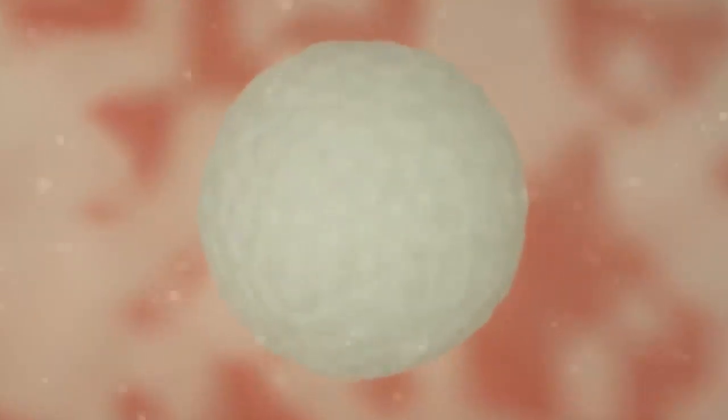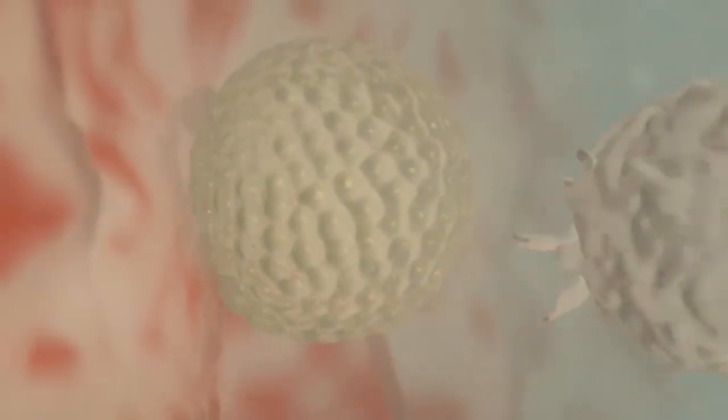Usually the blastocyst implants in the posterior wall of the uterus. However, implantation can also occur on the side as we will see in a moment. The blastocyst floats in the protective and nourishing uterine mucus. For implantation in the uterus, the blastocyst must first hatch from the protective zona pellucida.